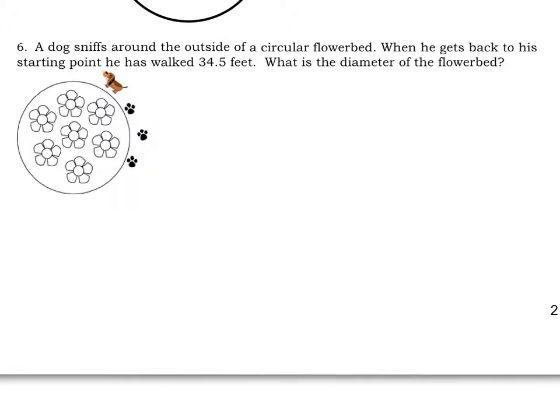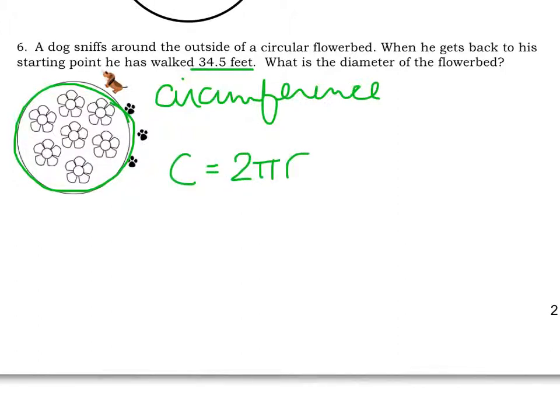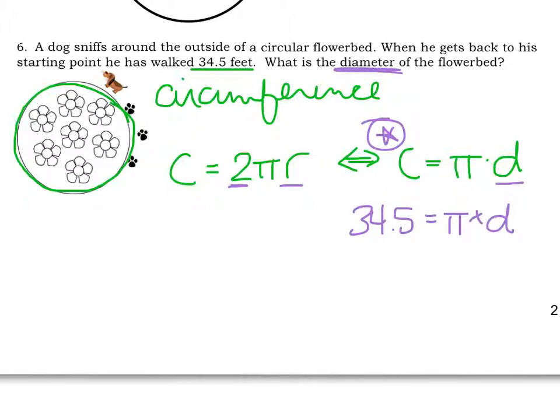In the next example, we have a dog sniffing around the outside of a flower bed, all the way around. When he gets back to his starting point, he walked a total of 34.5 feet. Notice what I just outlined. It's circumference. And we know the circumference so we can find the diameter. The formula they gave us is circumference equals 2 pi r. However, we also know that circumference equals just pi times our diameter, because 2r is simply diameter. So, since it's asking for diameter, I'm going to use this formula. We know circumference is 34.5 equals pi times diameter. And when we divide by pi to get diameter alone, we get diameter equals 10.98 feet.